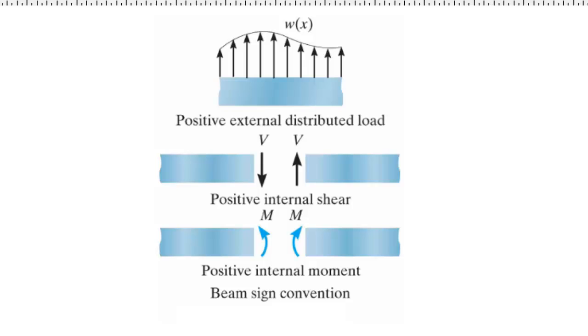The sign convention for shear force and moment will both depend on what side of the beam we place our imaginary cut on. If the cut is placed on the right side of the beam, a positive shear force will actually point down, and a positive moment will rotate the beam in the counterclockwise direction.